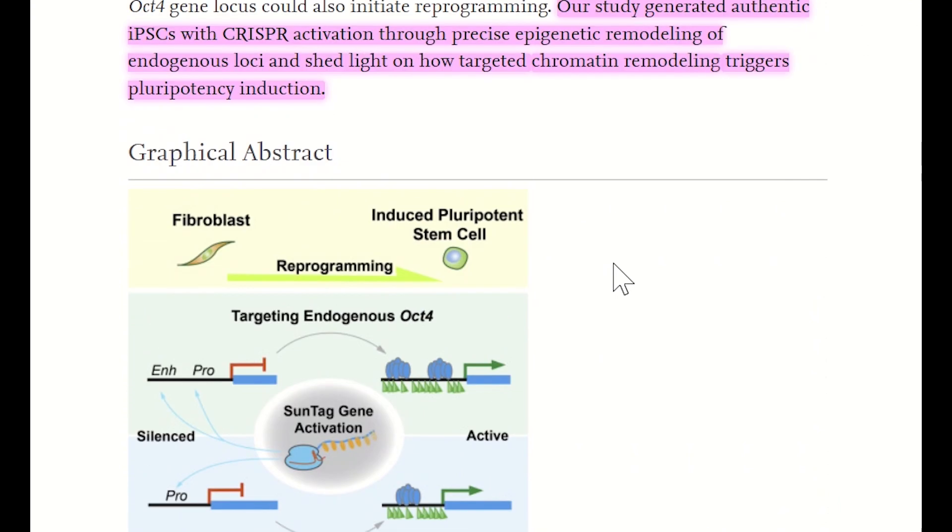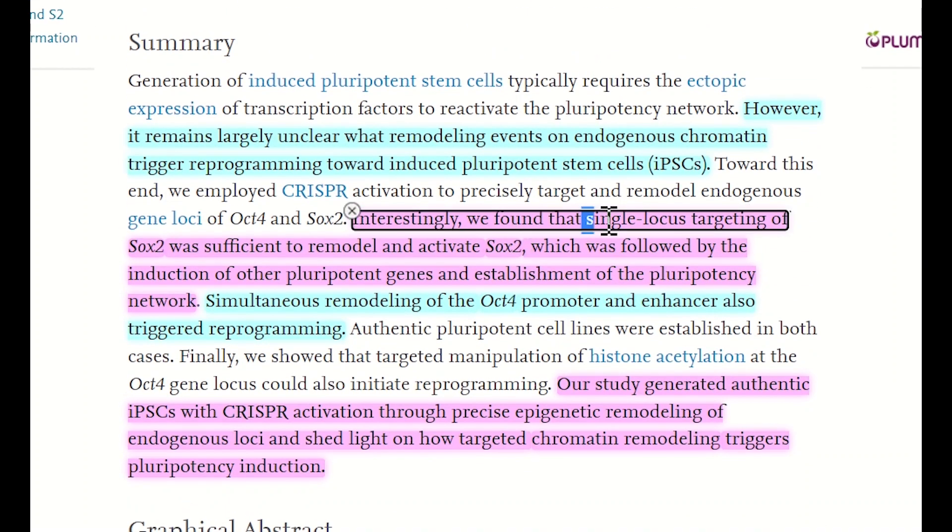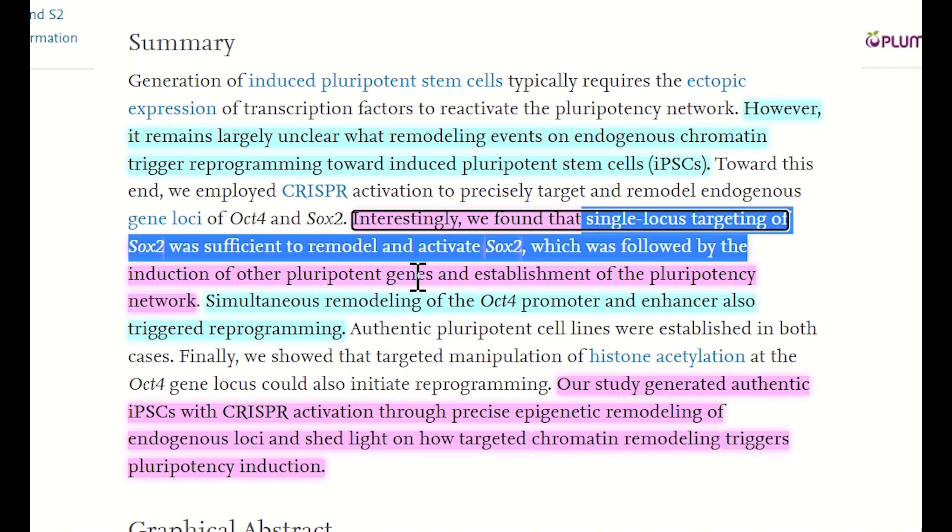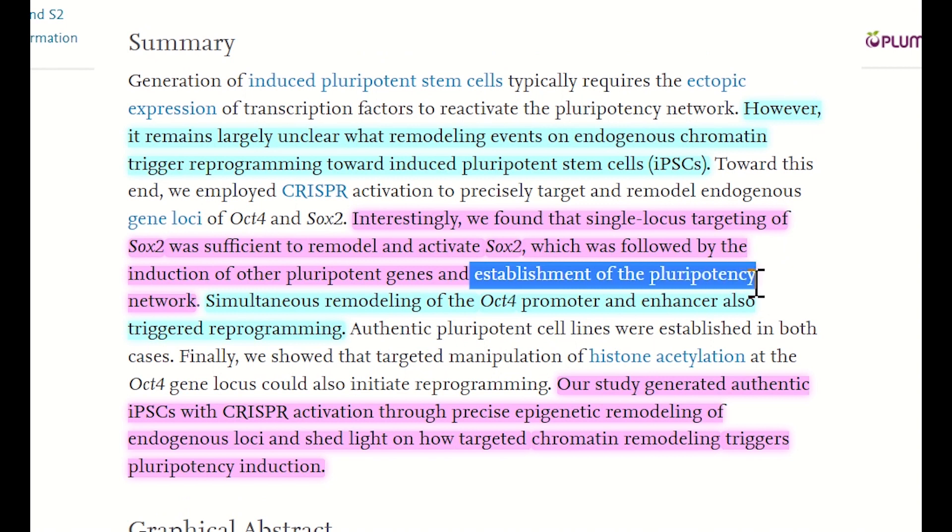And intriguingly, in these mouse cells, they found that just targeting SOX2 and activating SOX2 expression was sufficient to remodel the cells, since it enables the induction of other pluripotent genes and establish the pluripotency network. And so that's great news for mouse cellular reprogramming, as it seems like you can simplify the process.